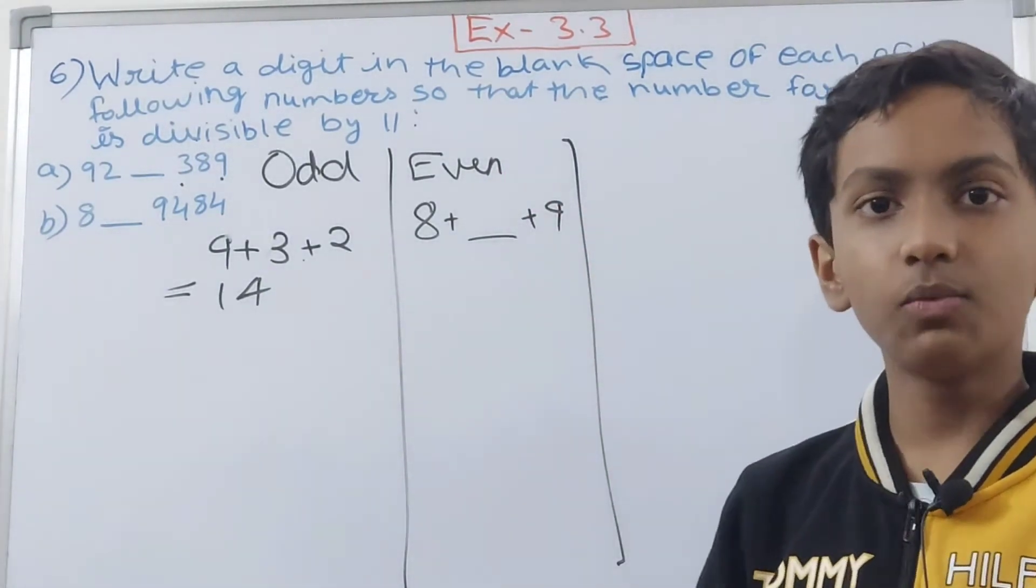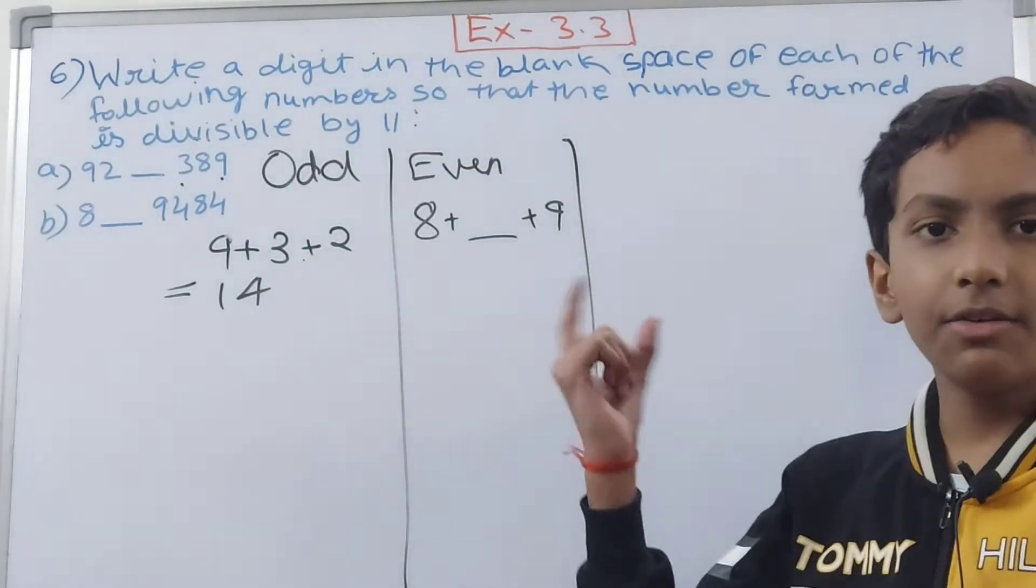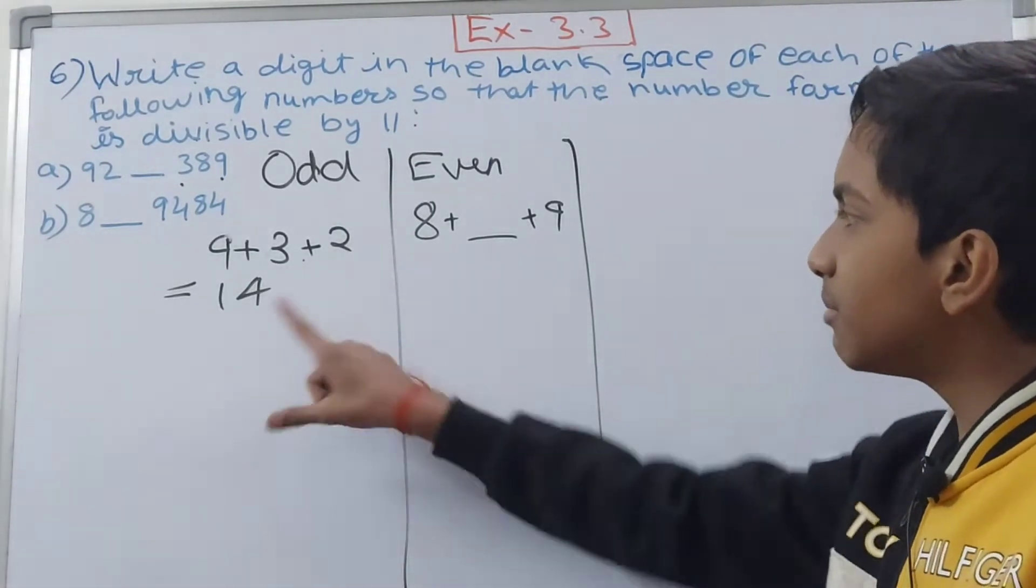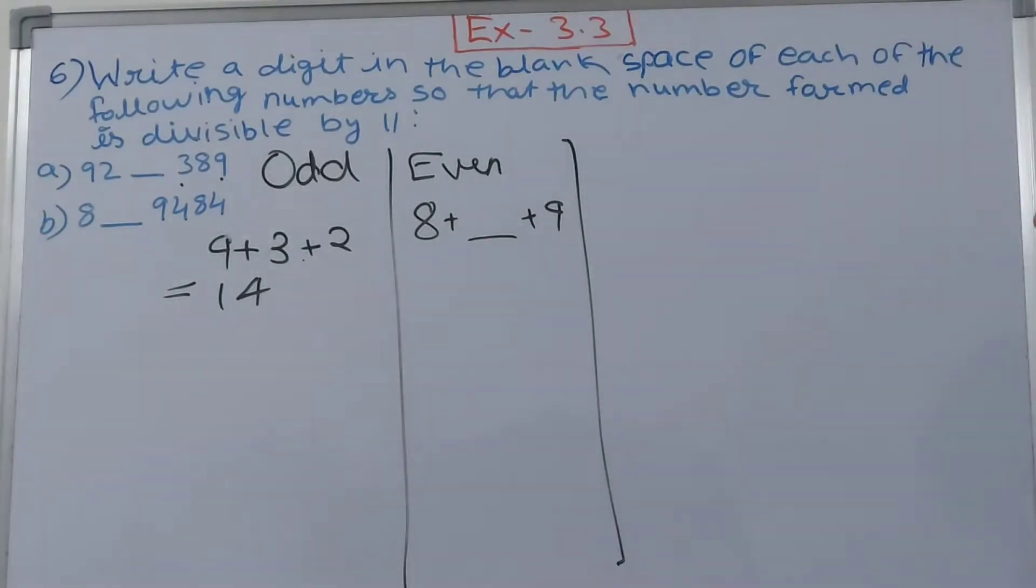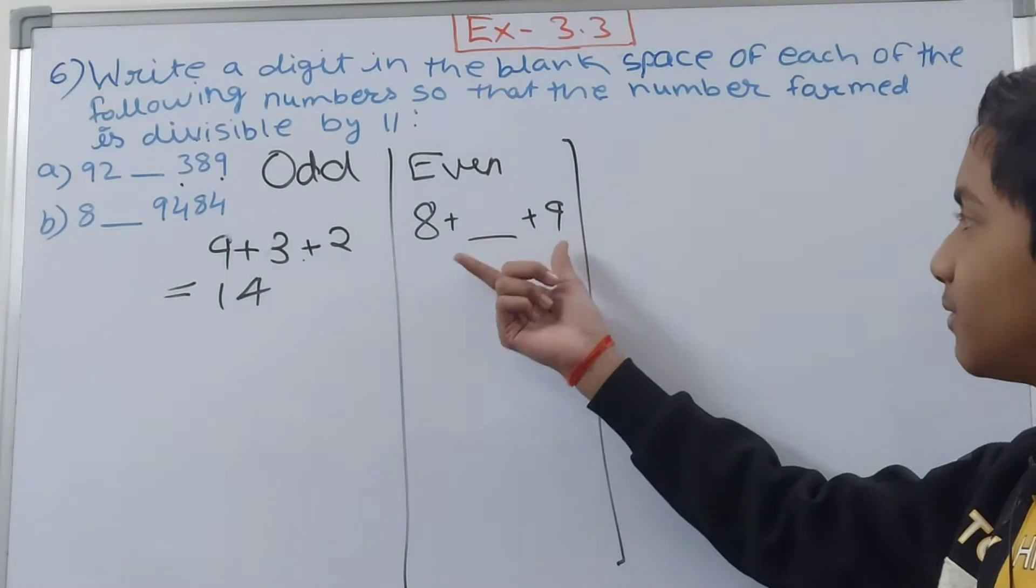So you know 8 plus 9, that will be 17 right. And 17 minus 14 is 3. So that is of course not divisible. You can write over here 8 plus 9 is 17.